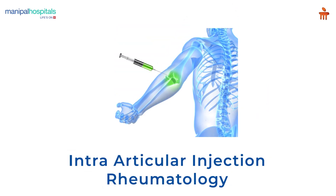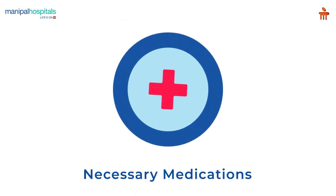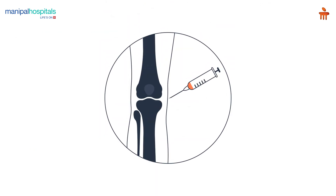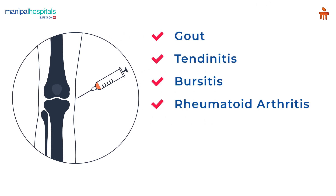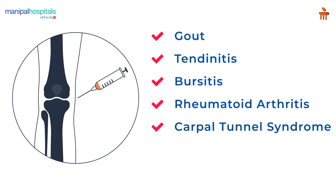An intra-articular injection is a procedure where the affected joint is injected with a hypodermic needle, through which the necessary medications are given. It is used to treat conditions like gout, tendinitis, bursitis, rheumatoid arthritis, carpal tunnel syndrome, and psoriatic arthritis.